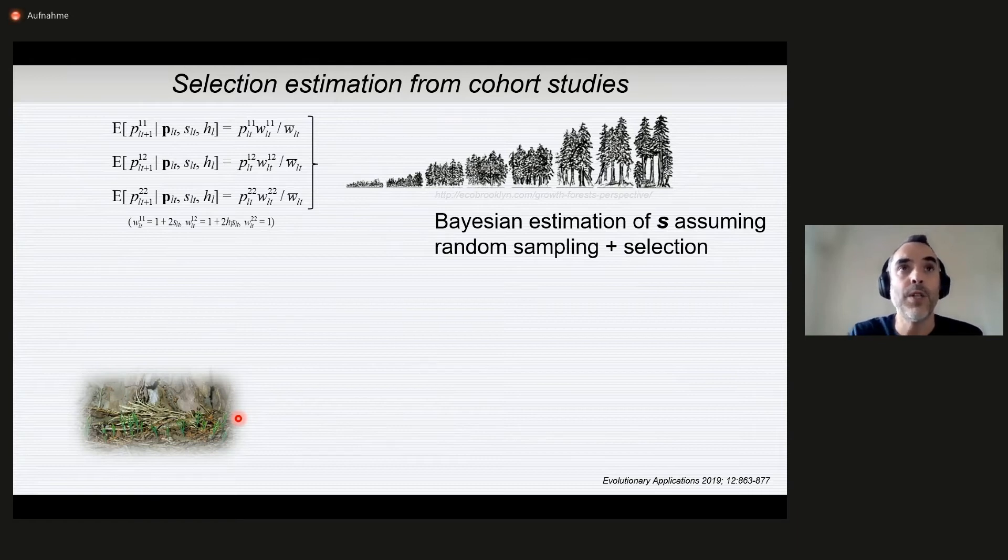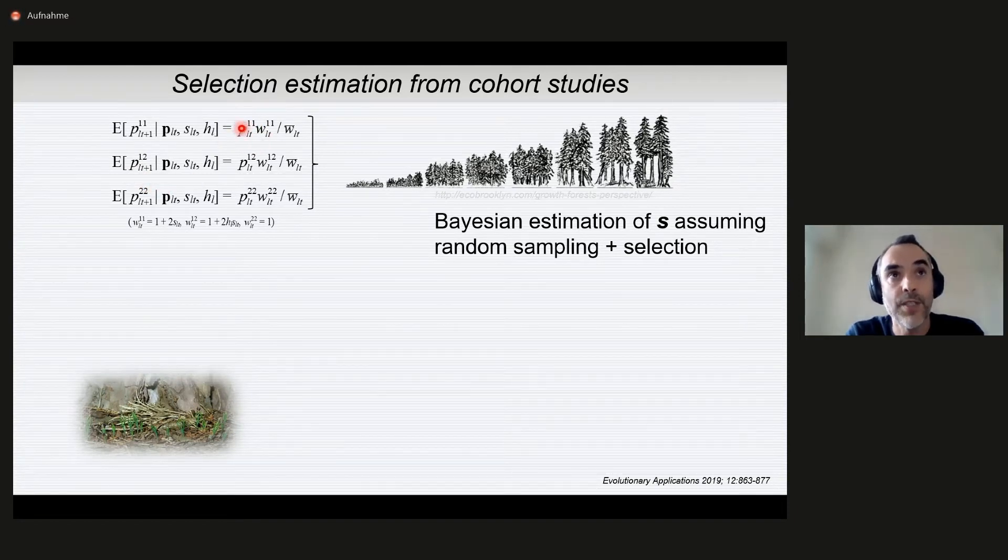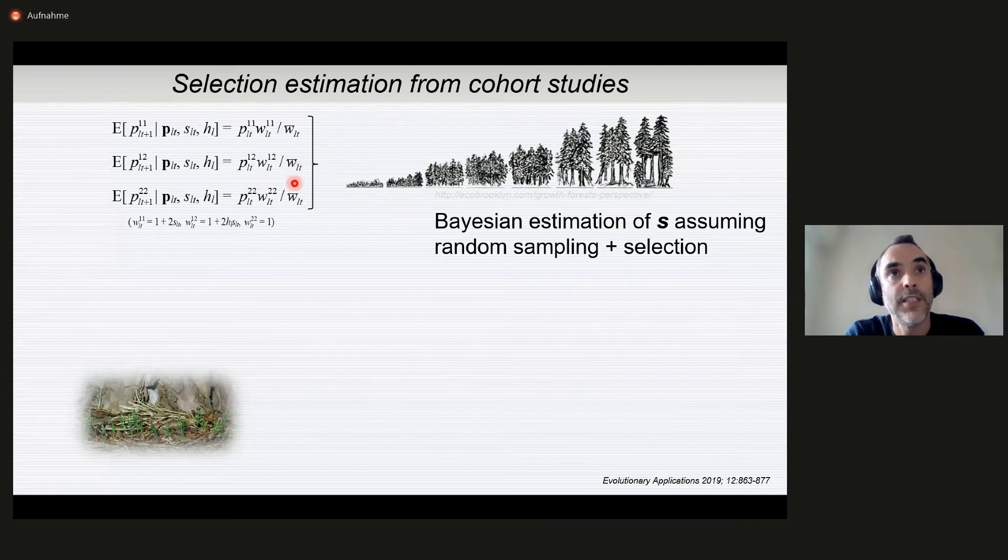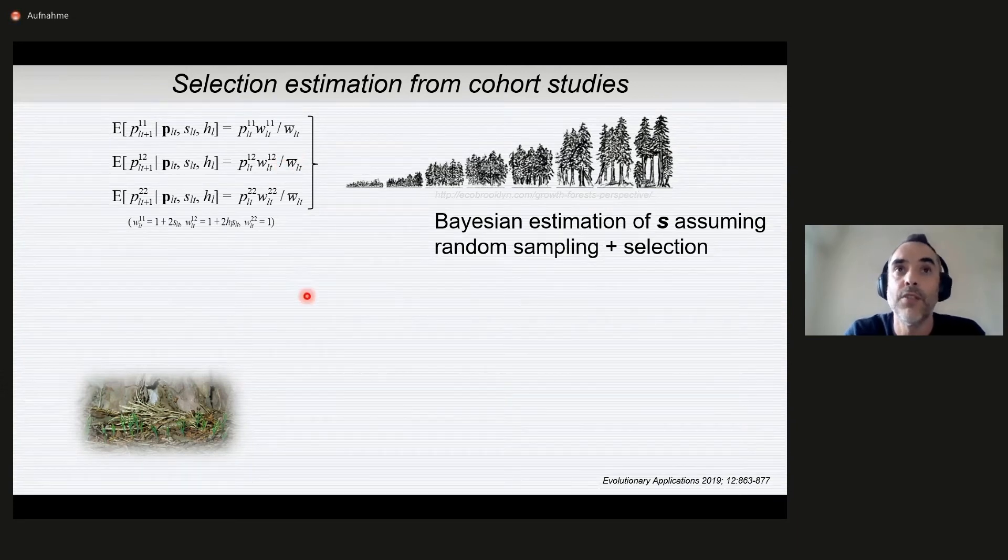If we want to estimate selection coefficients, we will have to use this fundamental equation of natural selection, one of the classical equations in population genetics, where we can express the expected genotypic frequencies after selection as a function of the frequencies before selection and the relative fitness of each genotype. 1-1 is one homozygote, 1-2 heterozygote, 2-2 the other homozygote. This is the relative fitness or the relative survival probabilities. This term here, this average, is the mean fitness of the cohort.